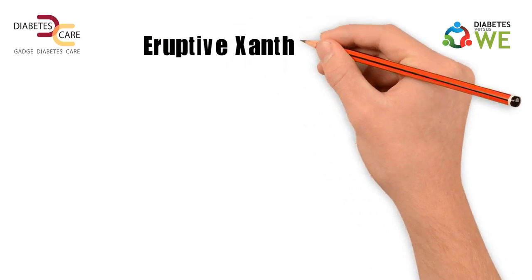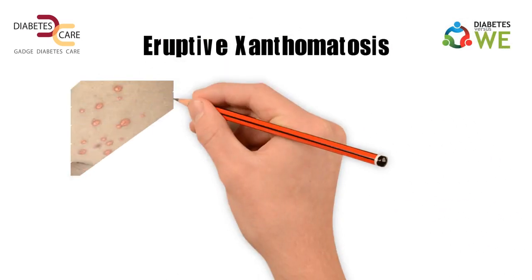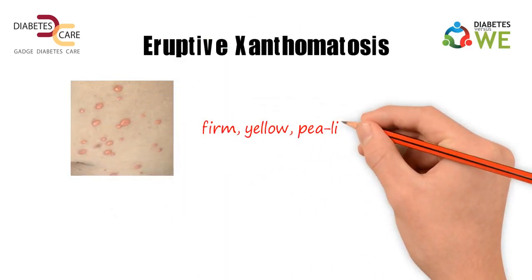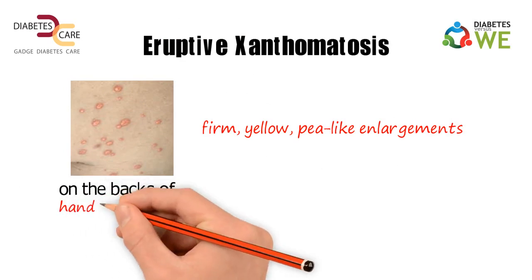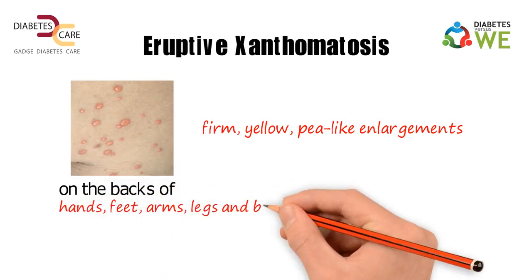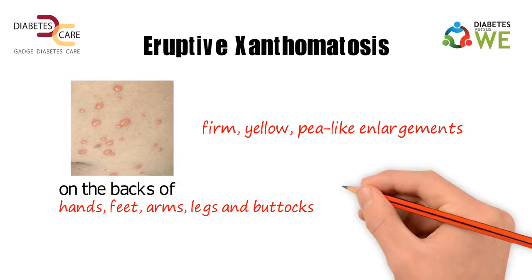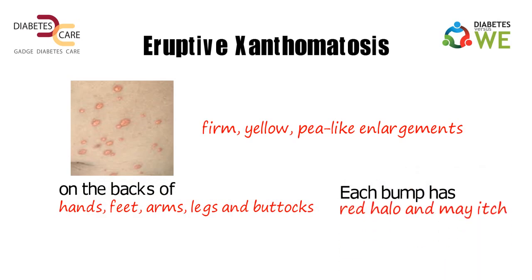Eruptive xanthomatosis: this condition consists of firm, yellow, pea-like enlargements on the backs of hands, feet, arms, legs, and buttocks. Each bump has a red halo and may itch.